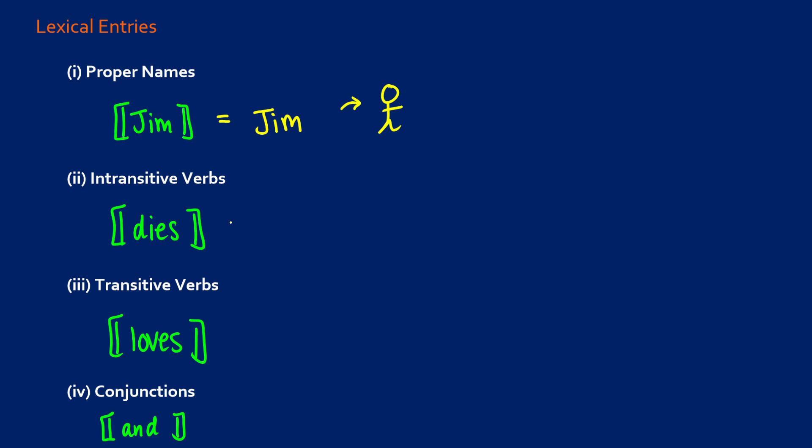With intransitive verbs we know that these take the form like x dies or x sleeps, so we just need a subject. So this is going to be lambda x dot x dies. So this will be true if we find a subject that dies.